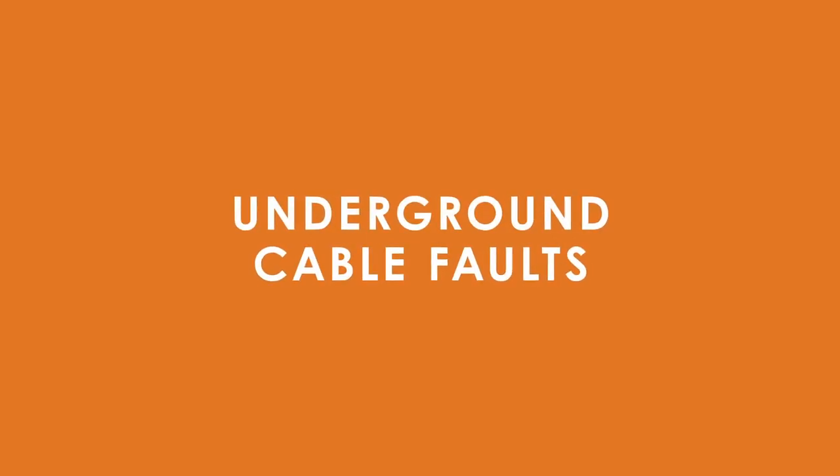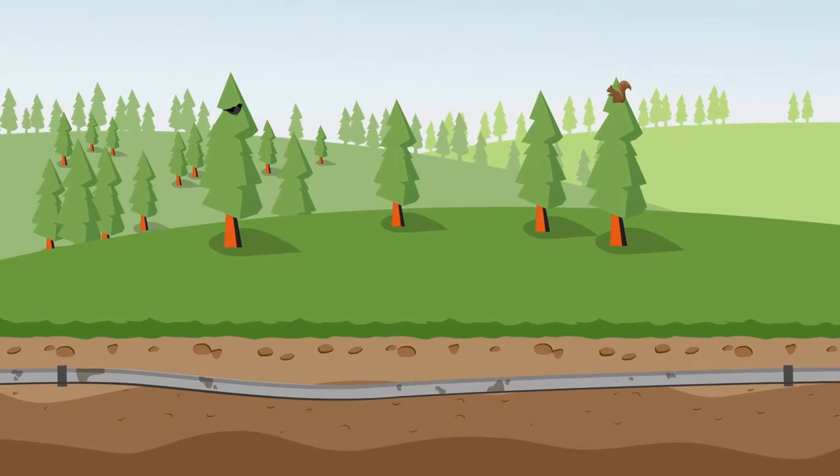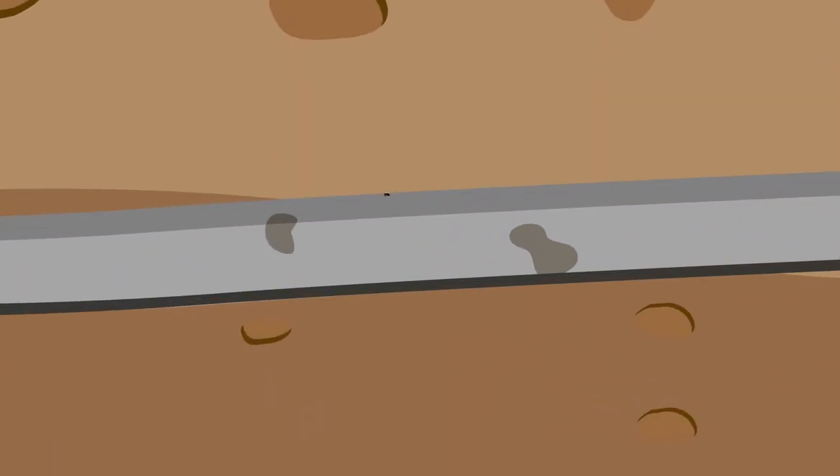Cable faults are one of the most common causes of outages in Saskatchewan, and unfortunately they usually don't have a quick fix. They occur when the insulation in an underground power line gets a hole or crack in it, causing it to short.